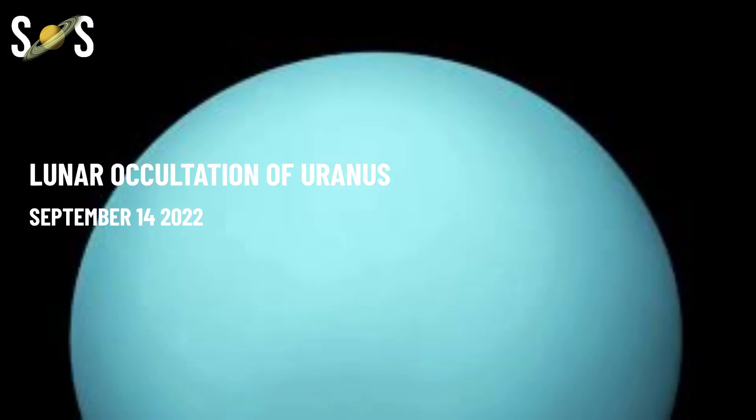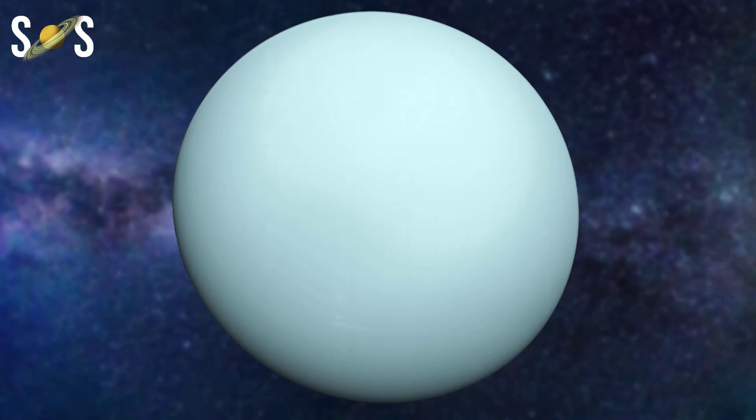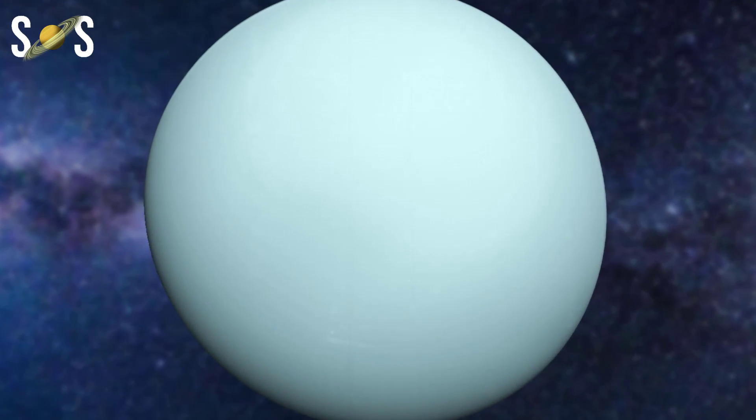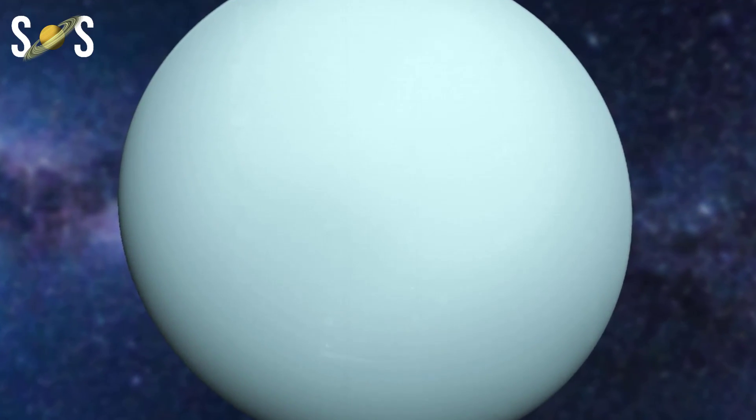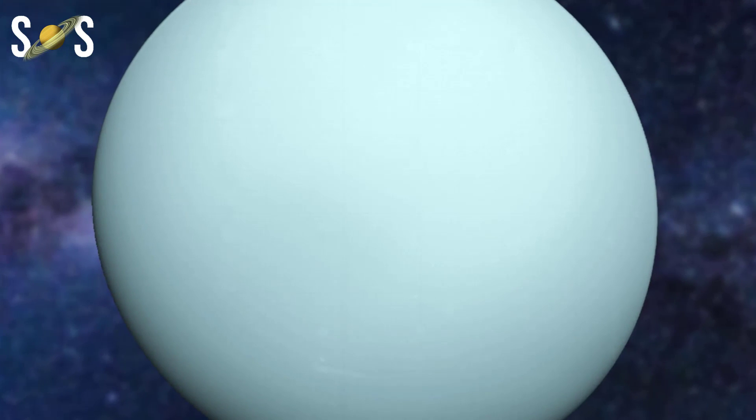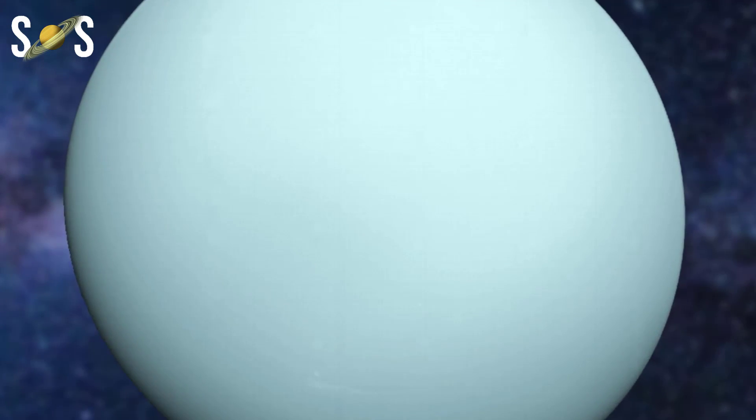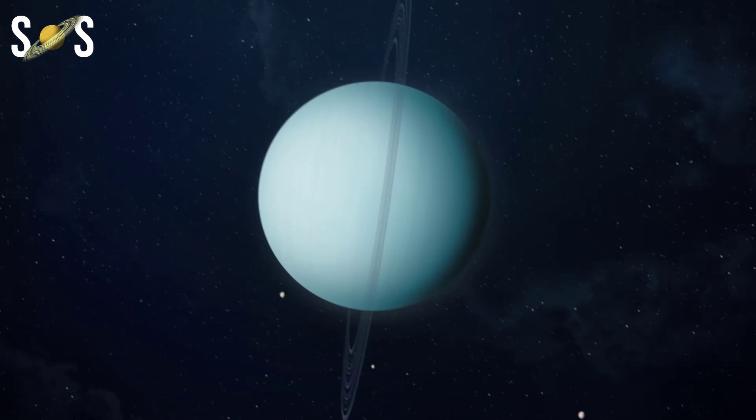September 14th, lunar occultation of Uranus. I've been mentioning it all year, but the lunar occultations of Uranus are some of the most exciting astronomical events to try and see. And we're finally entering the time of year when they're visible from land rather than over the ocean.